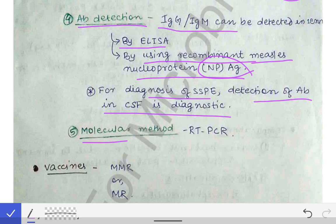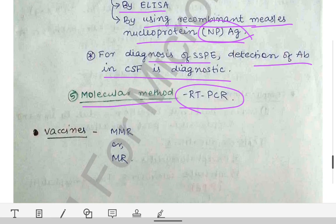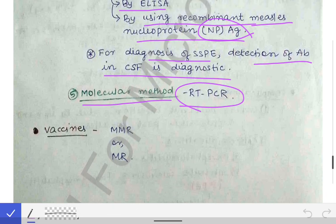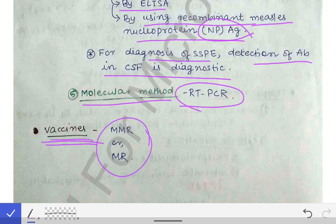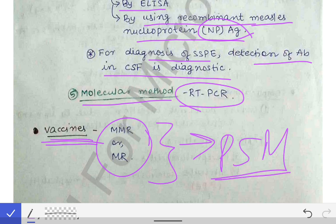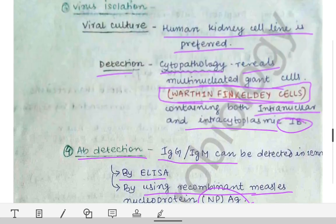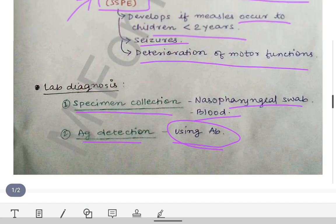The molecular method used is RT-PCR for detection of the viral genes, by which measles virus infection can be diagnosed. Vaccines for prevention of measles infection include the MMR and MR vaccines, which are part of the National Immunization Schedule 2020 and are studied in detail in PSM in the third year.